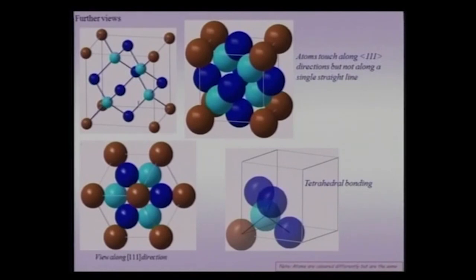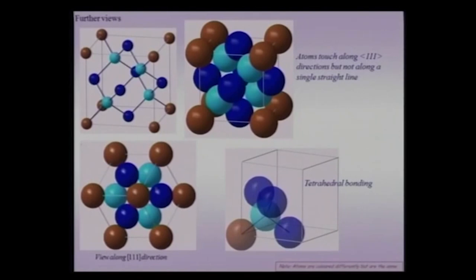Looking at the diamond cubic structure along the ⟨111⟩ direction, I have marked the atoms in tetrahedral positions inside with light blue, face-centering positions as dark blue, and the remaining ones in maroon. Please note all atoms are of the same kind — they have been colored differently for better visualization. The hexagon is formed by the outer carbon atoms. Any atom touches four others and is tetrahedrally bonded by sp3 hybridized bonds. This is not a close-packed structure even though it is based on the FCC lattice.